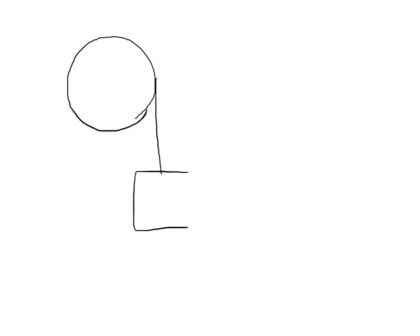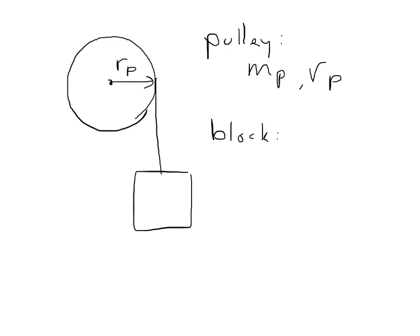Today we're going to work on an example of rotational motion. This is one of the classic examples in this field, and it's a pulley with a mass hanging from one side. The twist compared to what we've talked about previously is that the pulley has a mass — m sub p — and a radius of r sub p. Because it has a mass, it's going to take some effort to cause it to rotate. The block down here has a mass of m sub b.